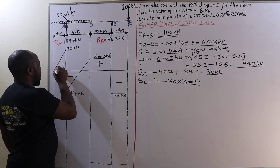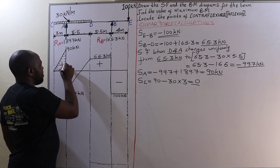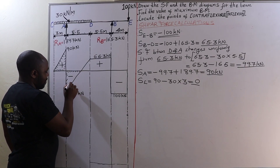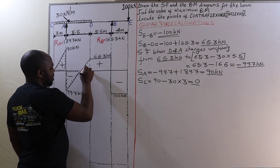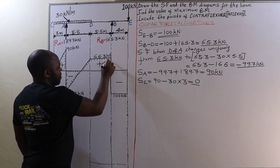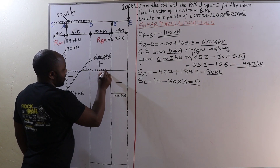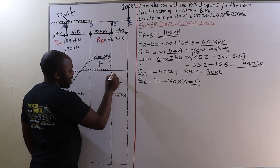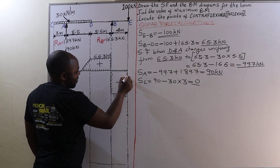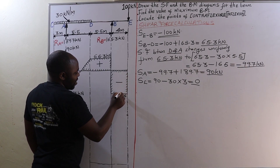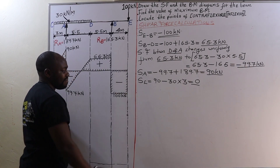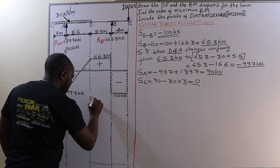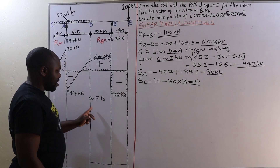To make our shear force diagram more visible, we shade off our outlines so the SFD becomes more clear. We label it SFD, denoting shear force diagram.